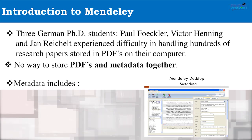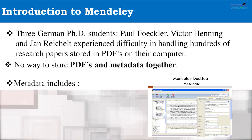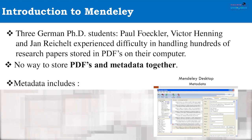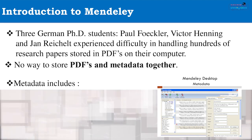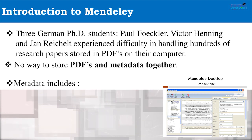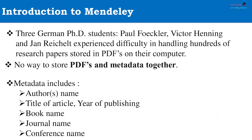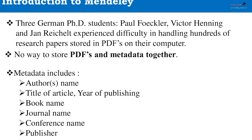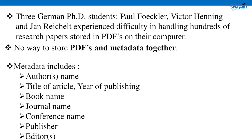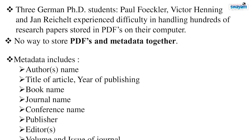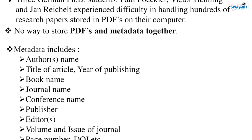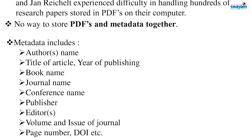Metadata is data about the data — it describes more about the data. Metadata of a manuscript includes the author name, title of the article, year of publishing, book name, journal name, conference name, publisher, editors, volume of journal, issue of journal, page number, DOI, etc.